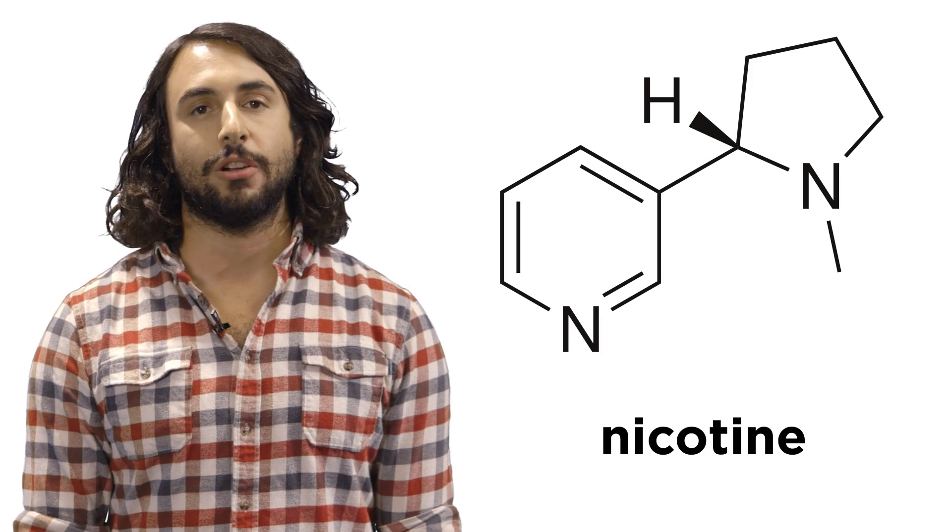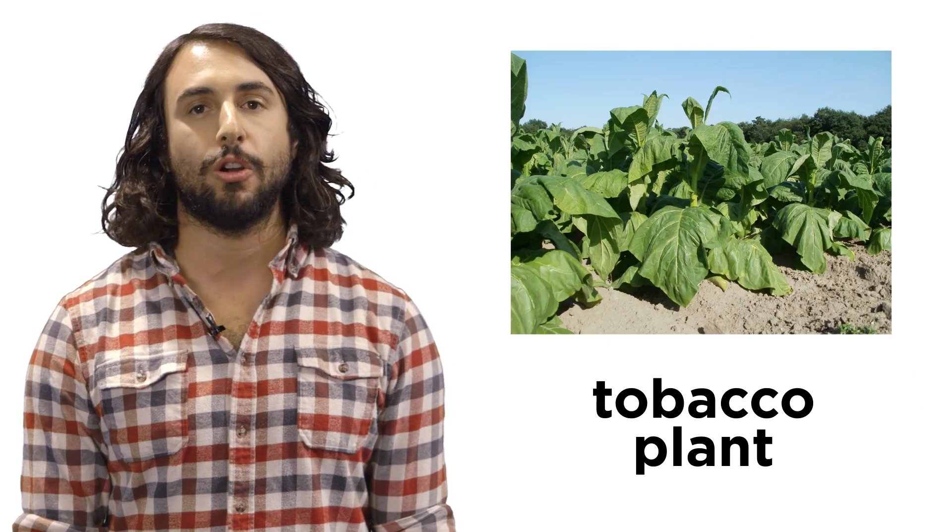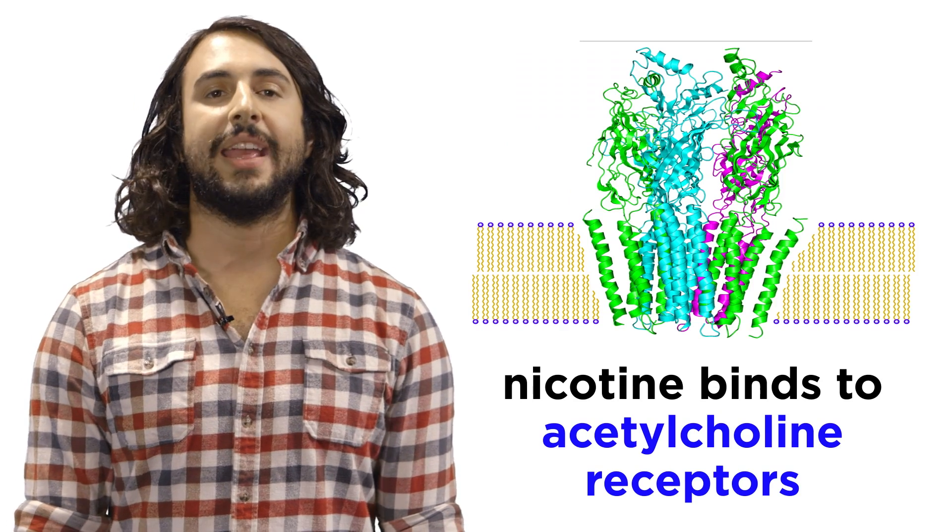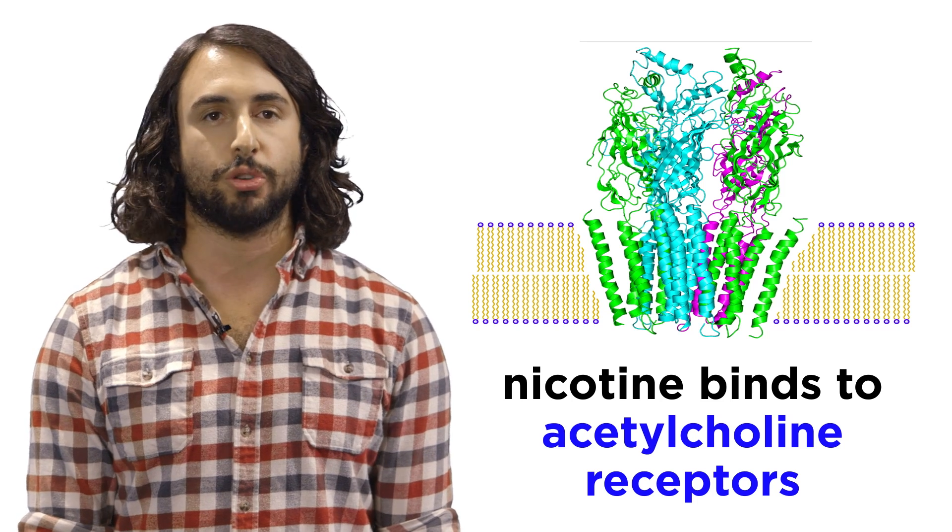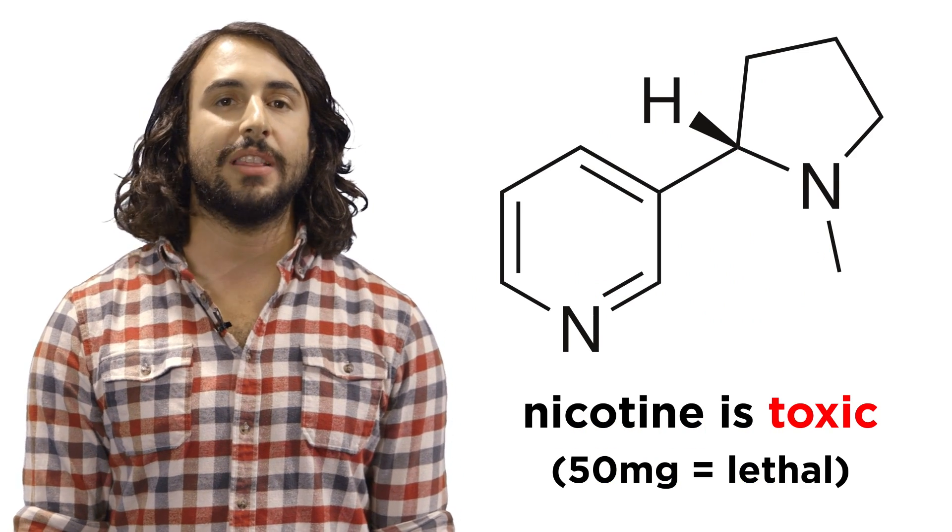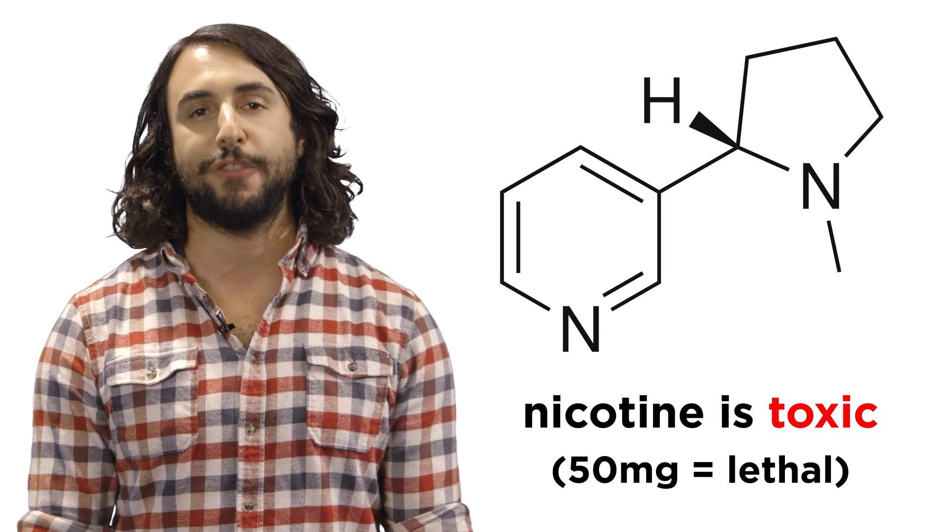Nicotine is another alkaloid, which is found in the tobacco plant. It works by binding to acetylcholine receptors in the brain, increasing the levels of certain neurotransmitters. However, nicotine is highly toxic, with a lethal dose for a human being about 50 milligrams.